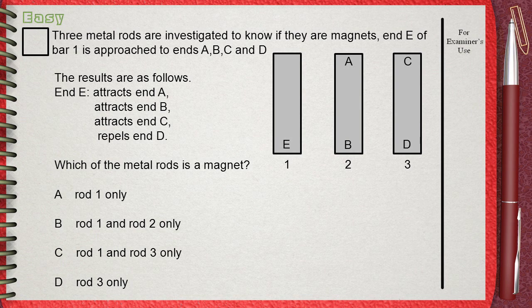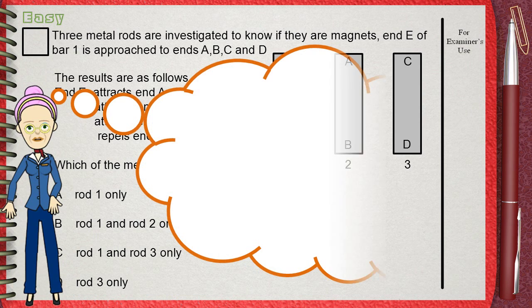Three metal rods are investigated to know if they are magnets. End E of bar 1 is approached to ends A, B, C and D. The results are as follows: End E attracts end A, also end E attracts end B, end E attracts end C, but end E repels end D. When you think about this question,